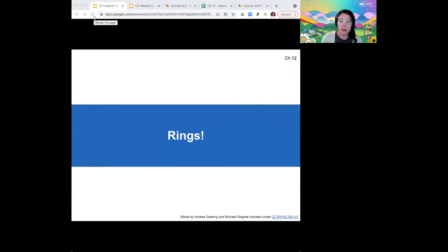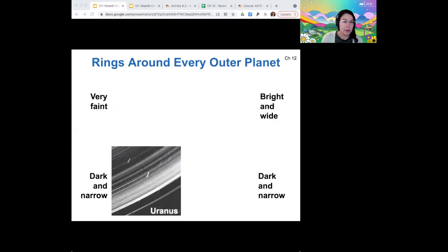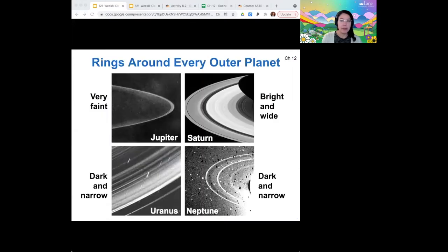All right, so let's talk about rings. When we look at the Jovian planets, all of them have a ring system of some sort, but they are not all the same color or mass. Jupiter has a very faint ring, and Saturn's rings are the ones you probably think of. Those are bright, wide, very massive compared to the rest of the Jovians.